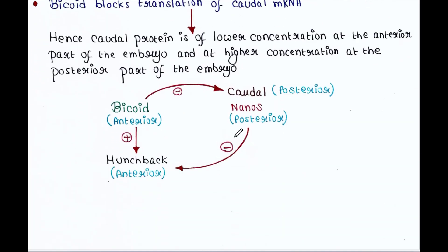Here is the schematic. Bicoid and hunchback are proteins found in the anterior part of the embryo, while caudal and nanos are posterior proteins found in the posterior part of the Drosophila embryo. Bicoid enhances the expression of hunchback and blocks the expression of caudal protein — hence caudal is found only in the posterior part. Nanos blocks hunchback expression, so hunchback is found only in the anterior end of the embryo.